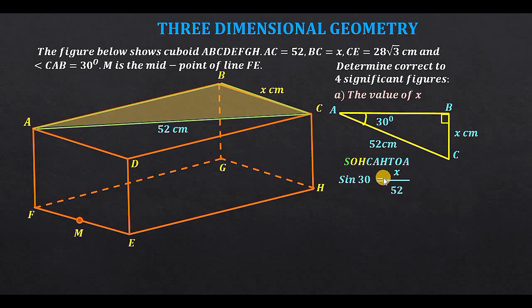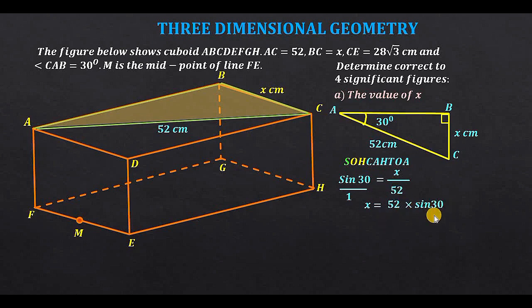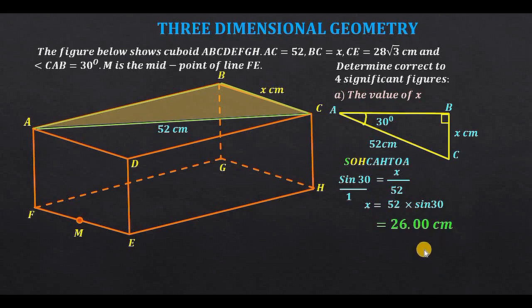Cross-multiplying: X equals 52 times sine 30. Sine 30 is one-half, so a half of 52 gives X = 26.00 centimeters, to four significant figures as required.